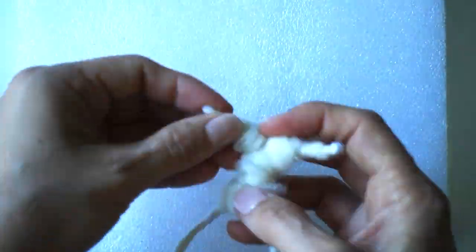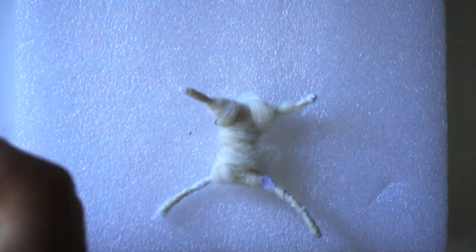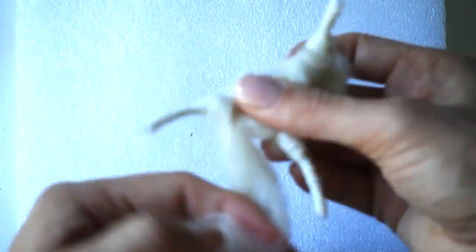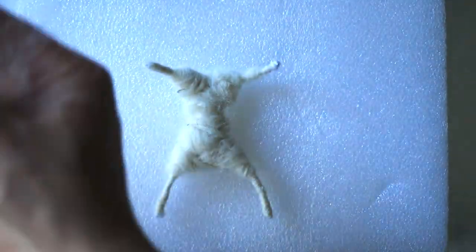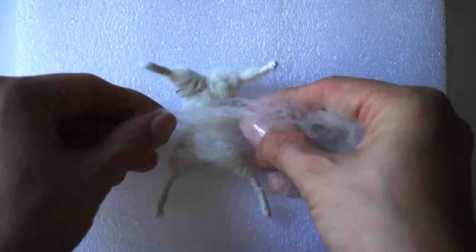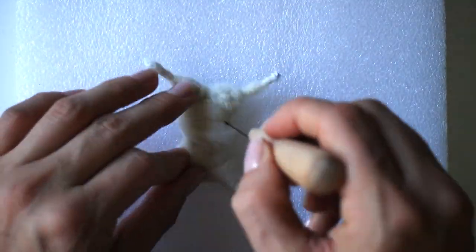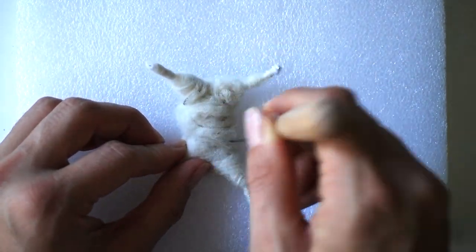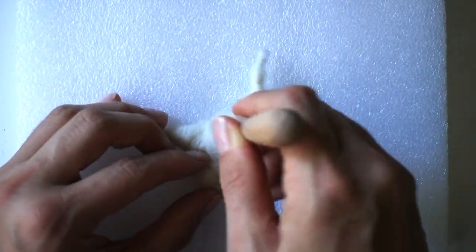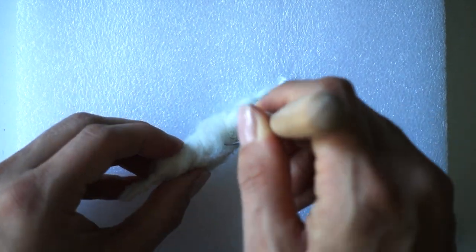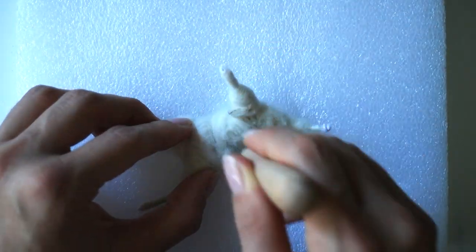Continue adding wool and wrapping around the body. As you can see here, this is a pretty lengthy process, so be patient. Once there's enough flesh on the body, we can start stabbing it. Continue adding the wool and stabbing it until the full body is formed.